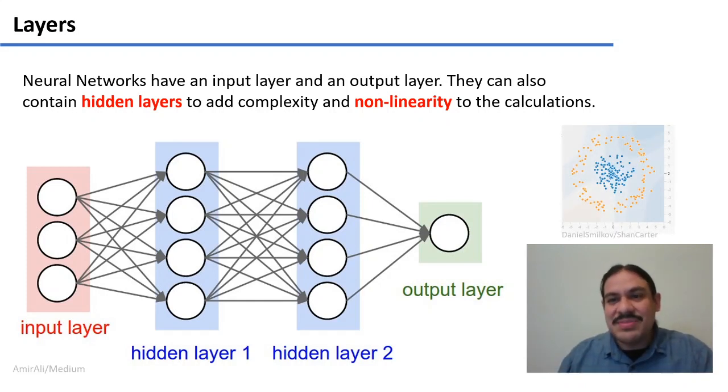For example, if we have something like this, where you have a globular cluster of blue inside a ring of orange, there's no line that can go in between those clusters that would correctly separate the blue from the orange. You need some sort of non-linear function, like circles or something like that, to correctly separate the two. And a neural network can do this.